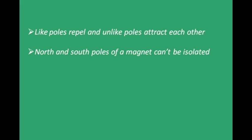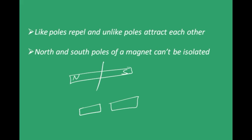Like poles repel and unlike poles attract each other. An important property is that north and south poles of a magnet cannot be isolated. If you break a bar magnet, you get two smaller pieces, but even these pieces individually have north and south poles — the magnetic properties are weaker, but two poles always exist in each piece.